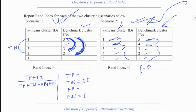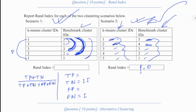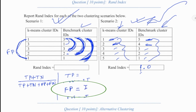We check the next pair. Is it a positive one or a negative? It's a positive pair because they have the same cluster labels. So we look at the benchmark, and the benchmark is saying that they should be in two different clusters. So it's a false positive. We record this one in false positive.